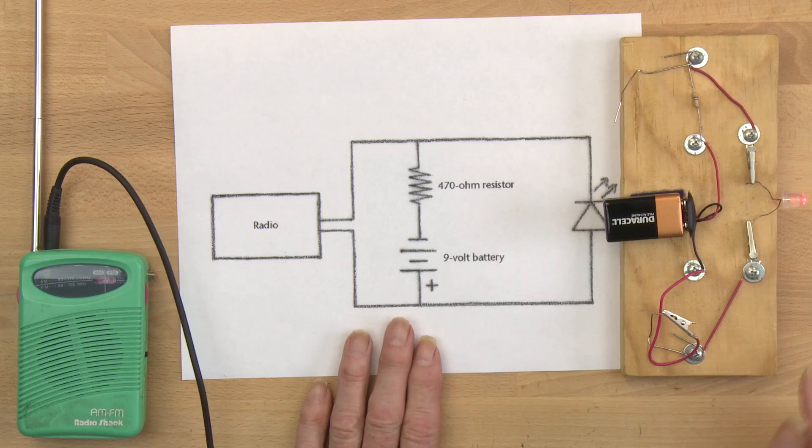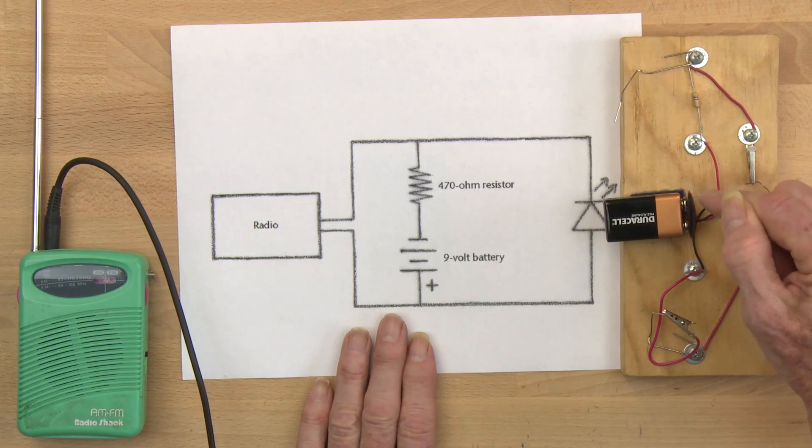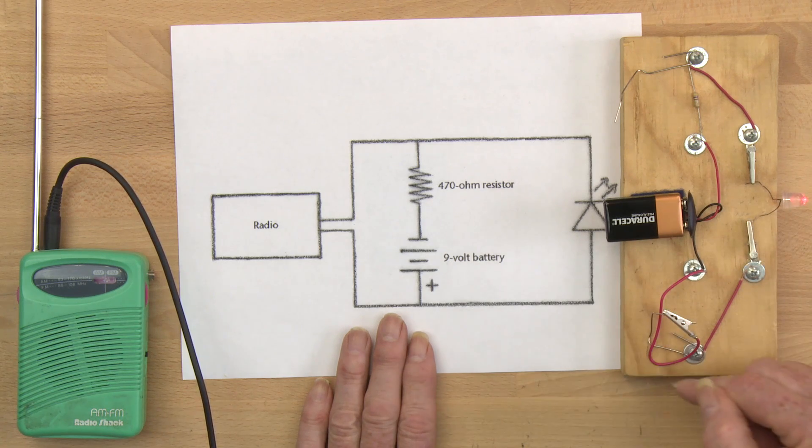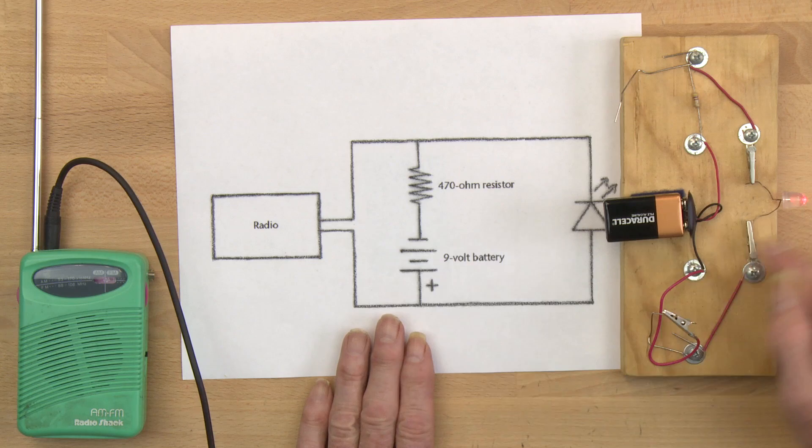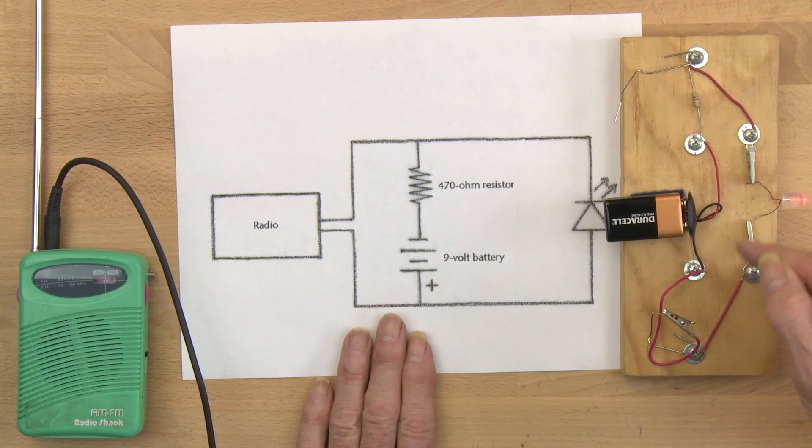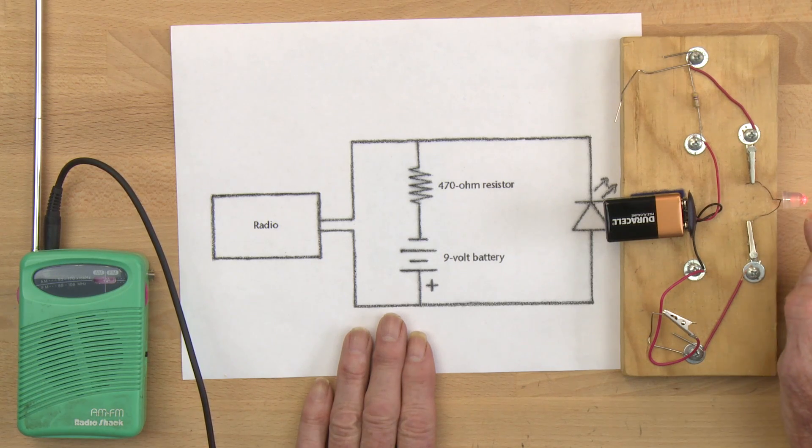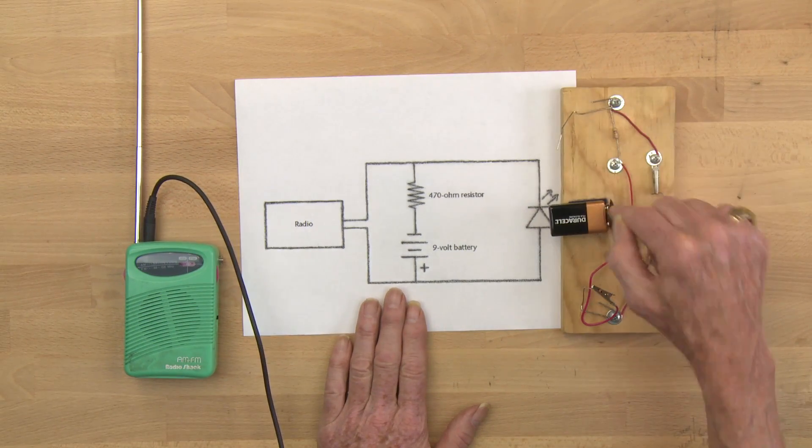Now what's going on here is that electrons are actually leaving the negative terminal of the battery, going through the black wire, going to the short lead of the light emitting diode. And they come in with the full 9 volts, very high energy. And they drop their energy and turn it into light. And then the electrons with lower energy continue around back into the battery.